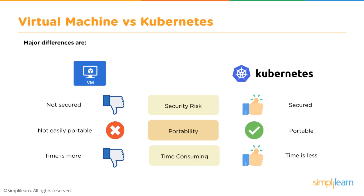With virtual machines there are inherent security risks, whereas Kubernetes is inherently secure — largely because of the legacy of where it came from, which we'll talk about in a moment. Virtual machines are not easily portable, whereas Kubernetes, working with Docker container solutions, is extremely portable. This means you can spin up and spin down and manage your infrastructure exactly the way you want, scaling it on the demands of customers. From a time-consuming point of view, Kubernetes is much less time consuming than virtual machines.